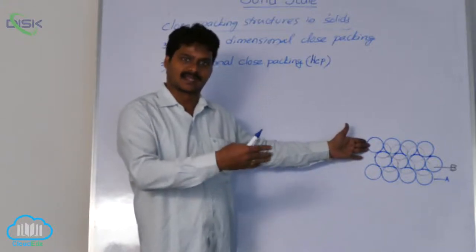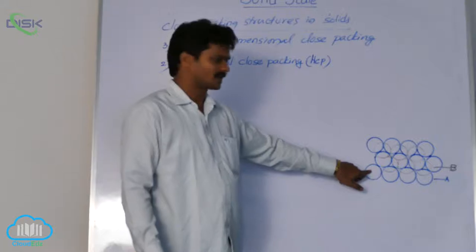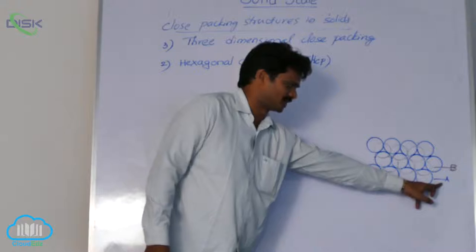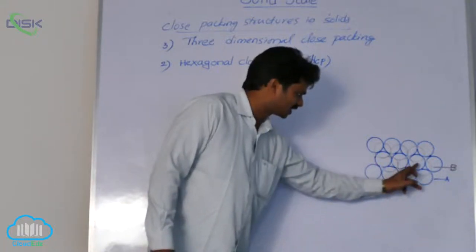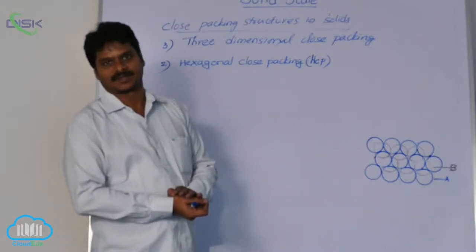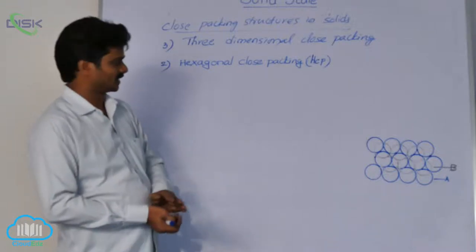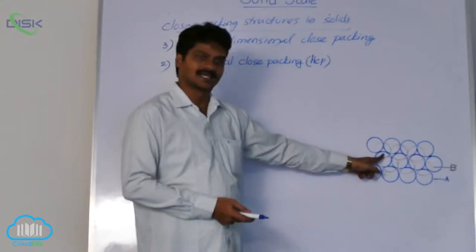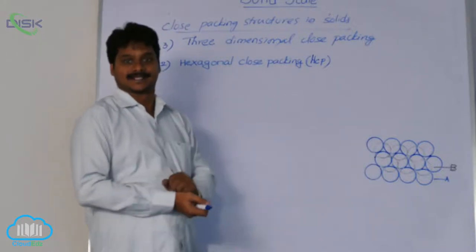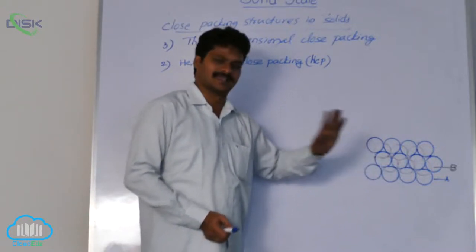Two two-dimensional hexagonal layers are placed. The blue-colored spheres indicate the first layer of spheres. The black-colored spheres are spheres of the second layer. The spheres of the second layer are placed over the first layer such that the spheres of the second layer occupy the depressions of the first layer.